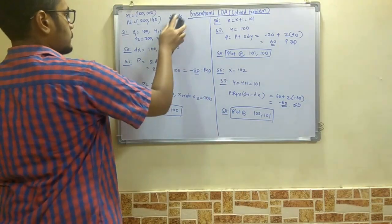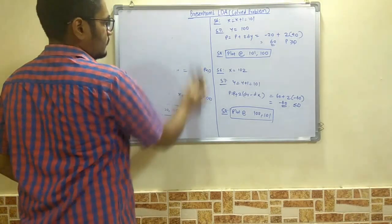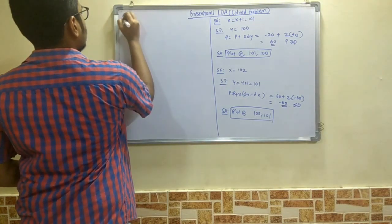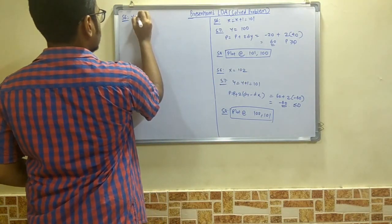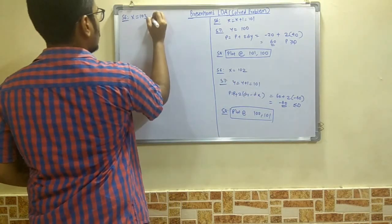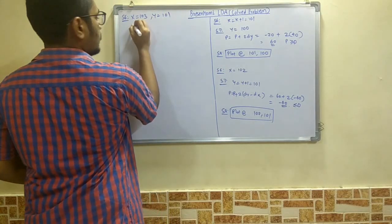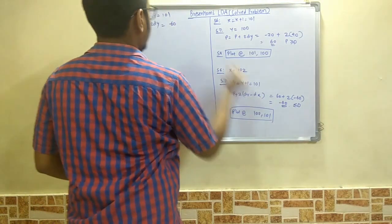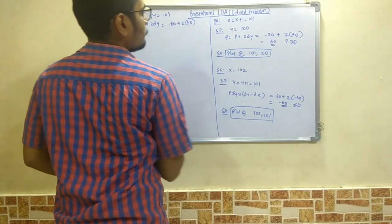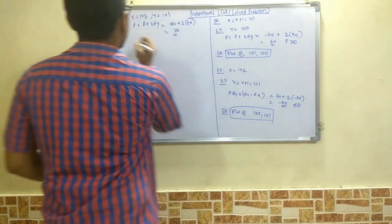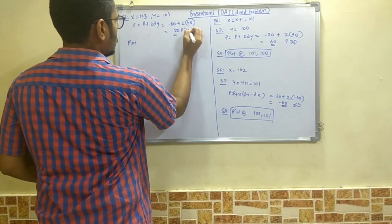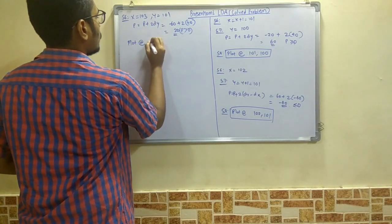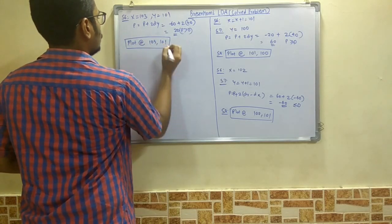Step 6: increment x to 103. Since p = -60 is less than 0, we do not increment y — y remains at 101. We update p = p + 2*dy = -60 + 80 = 20. Now p is greater than 0, so we note that for the next step. We plot the fourth pixel at (103, 101).